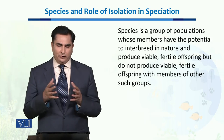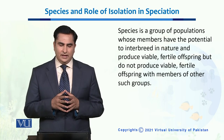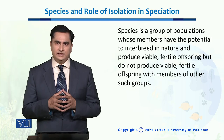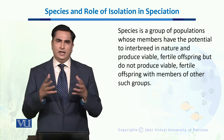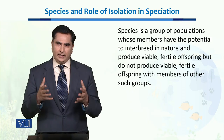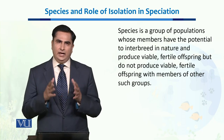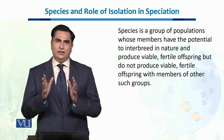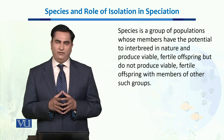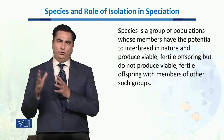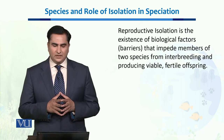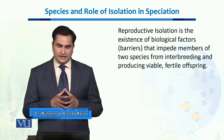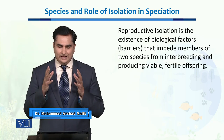In this unit we will talk about species and the role of isolation in speciation. A species is a group of individuals which can interbreed in nature and produce viable fertile offspring, but they do not produce viable fertile offspring with members of other species.